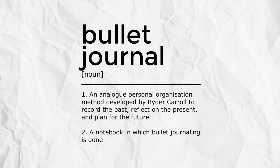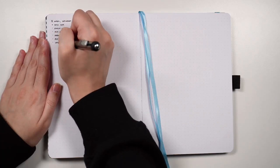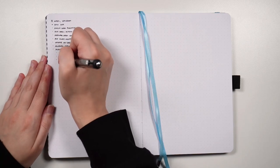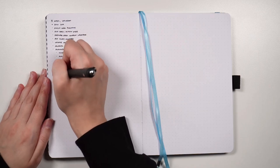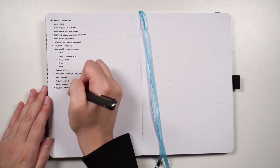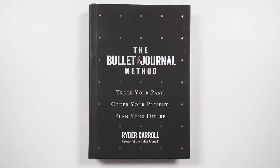The first term is bullet journal, which as a noun is an analog system for productivity and mindfulness, or it can describe the notebook you use. Bullet journal can also be used as a verb — the process of adding information to a notebook using the bullet journal method. The bullet journal method is probably the most complicated term on this list, but it's an all-encompassing term describing what the bullet journal is, how it works, and how to use it.